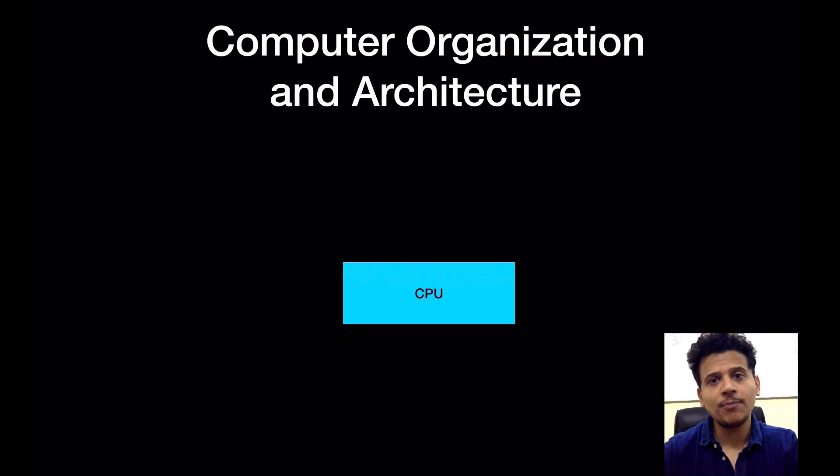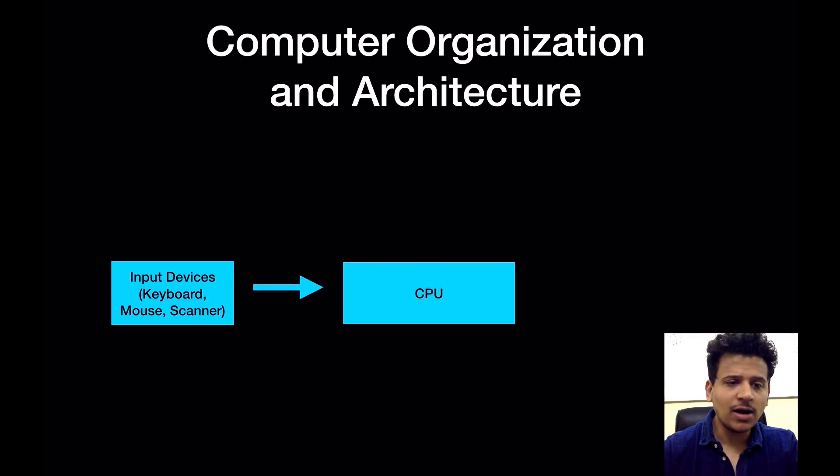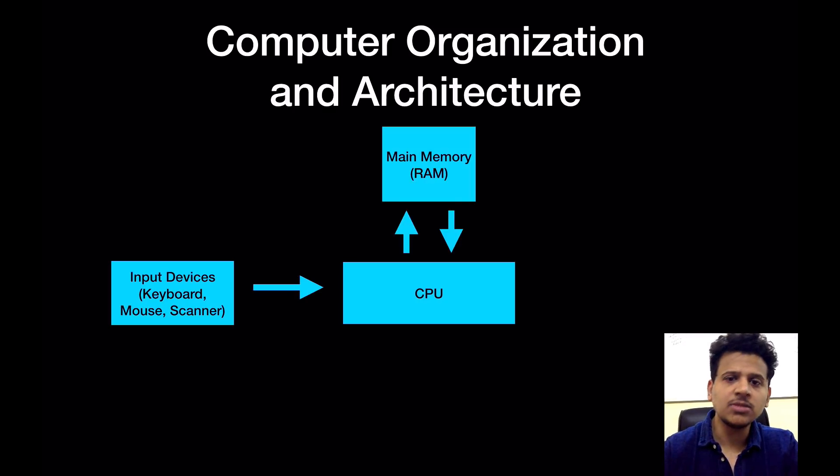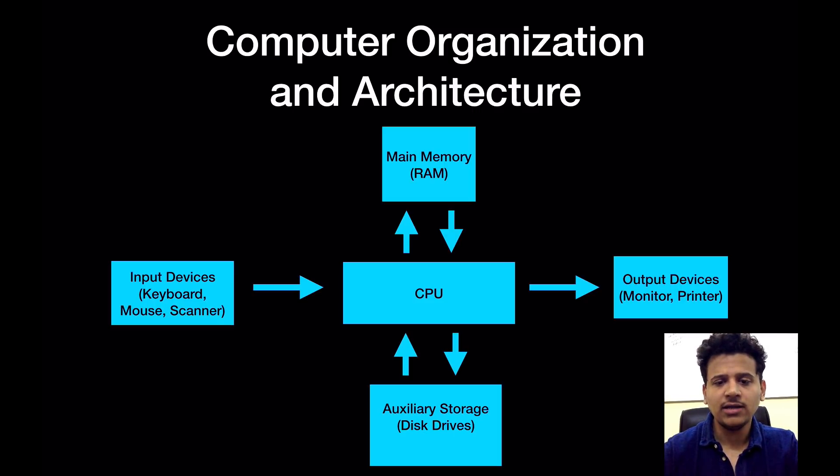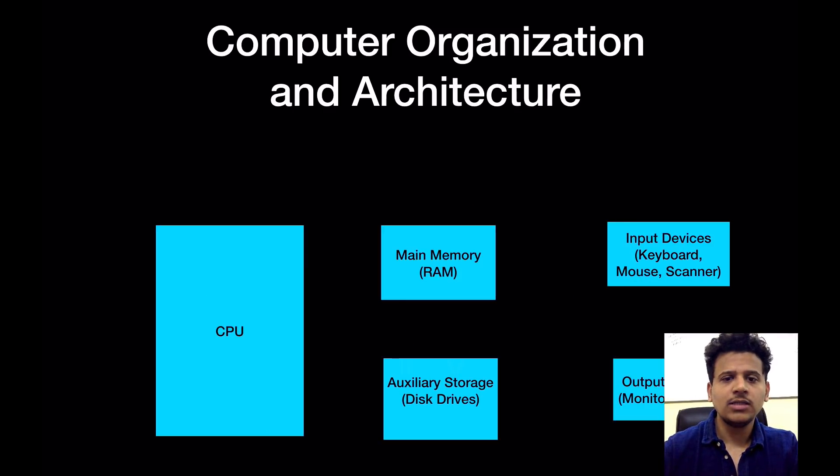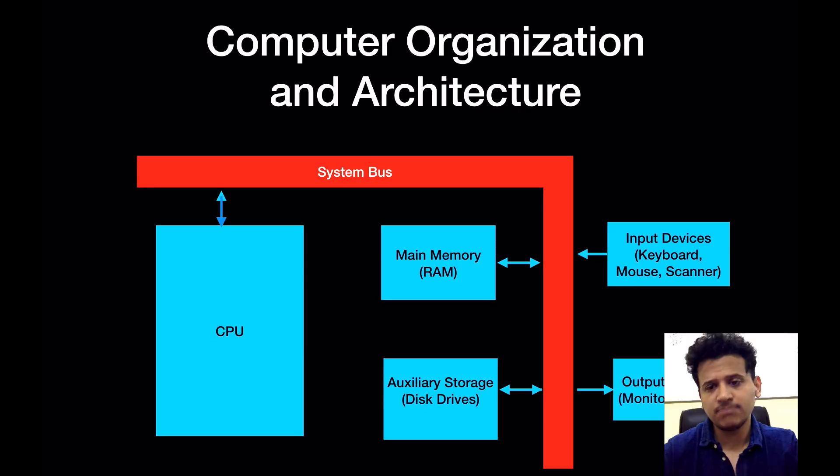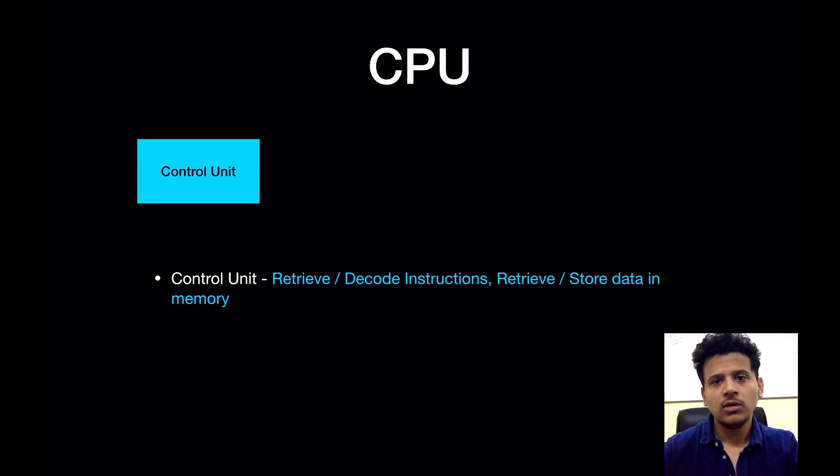Now we'll move on to the computer organization and architecture. So the most important part in computer organization and architecture is the CPU. CPU is the brain of a computer. Another part is input devices such as our keyboard, mouse, scanner, etc. Then comes main memory known as RAM. Then comes the output devices such as monitor, printers, etc., and last one is our auxiliary storage or disk drives such as hard disk drives. All these parts are connected by a system bus.